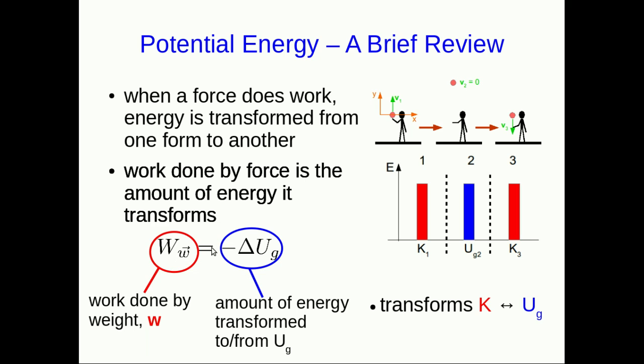In this case, the work done by the weight is equal to a change in the gravitational potential energy. Note that negative sign. When the ball is going up, the force is acting down. Force acting in the opposite direction to the direction of motion does negative work. So that's negative work, but the gravitational potential energy is increasing, so delta U_G is positive. And that explains this negative sign.